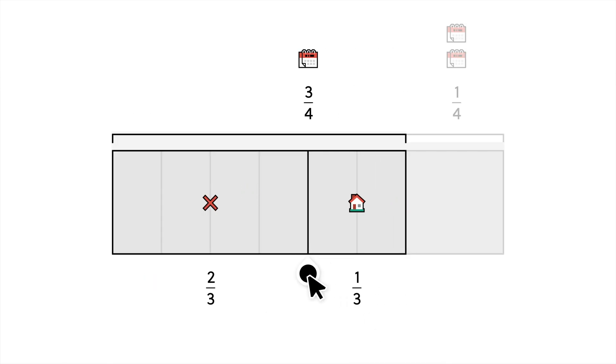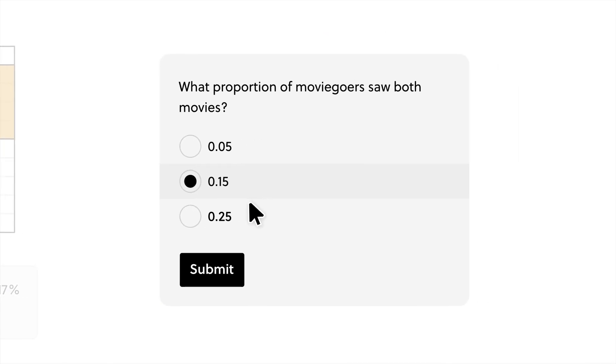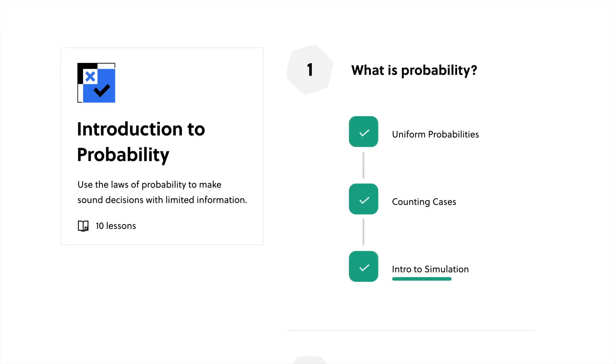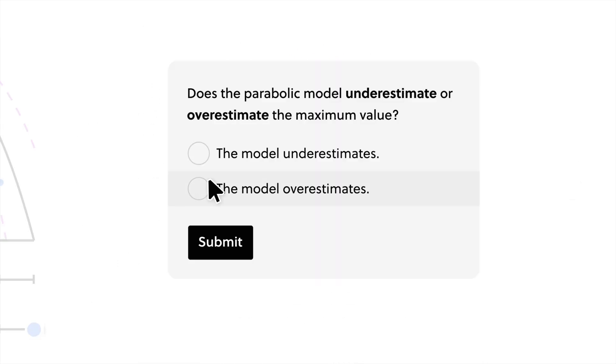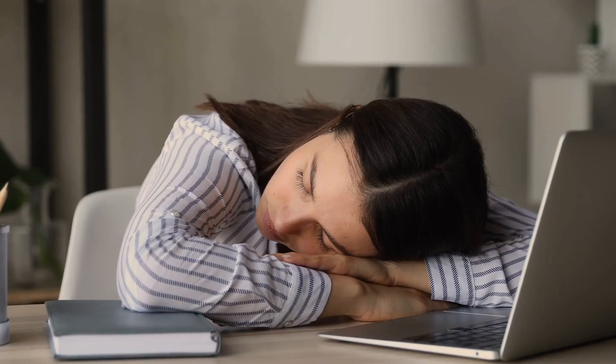Brilliant's interactive learning approach, which incorporates drag and drop coding, interactive charts, and visually engaging course material, has been demonstrated to be six times more effective than passive methods like watching lectures.